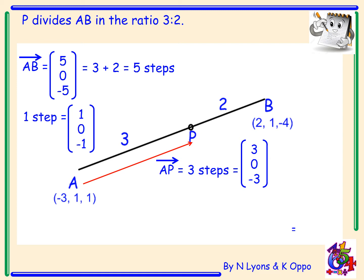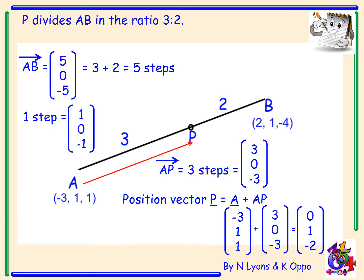But I want to know what the coordinates of P are. So P equals, starting at A, I have to add on the vector. So I'm starting at A. I've got the vector (-3, 1, 1). I add on my 3 steps. My vector equals (3, 0, -3). So that gives me the vector (0, 1, -2). Now that's the position vector of the point P. However, the question says find the coordinates of the point P. So I have to finally convert my position vector into coordinate form. So the coordinates of P equals (0, 1, -2).